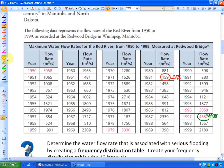The following data represents the flow rates of the Red River from 1950 to 1999, as recorded at Redwood Bridge in Winnipeg, Manitoba. So this is just a whole bunch of data. We're going to have to organize it. So essentially, for example, in 1950, the flow rate under the bridge was 3,058 meters cubed per second. So that's how many meters cubed of water were flowing under that bridge per second at the maximum water flow. And we have all the different years from 1950 all the way up to 1999. We're going to have to organize this data.